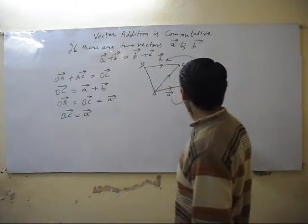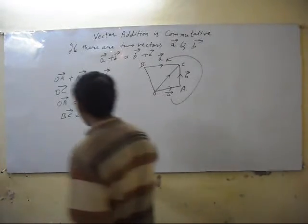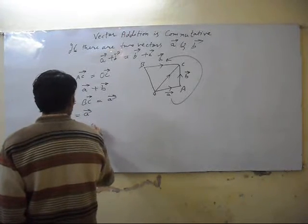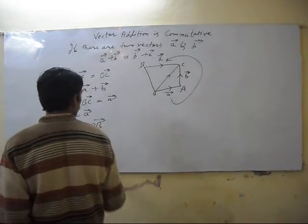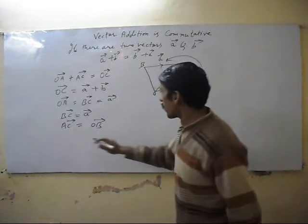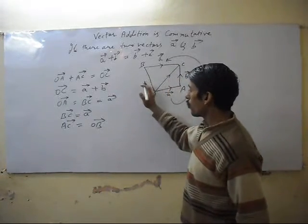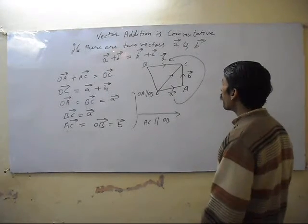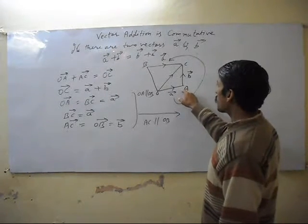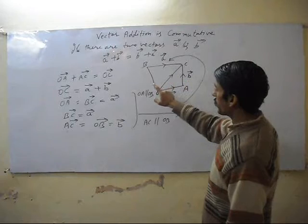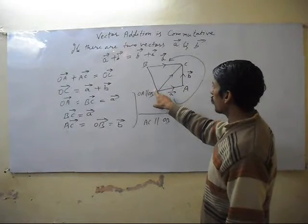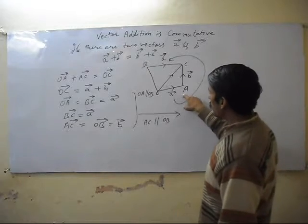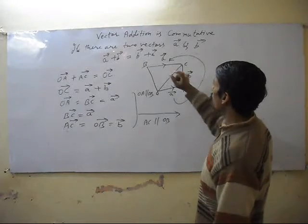And then AC vector equals OB. If AC is equal to OB, because AC equals OB, and OA is equidistant to BC.